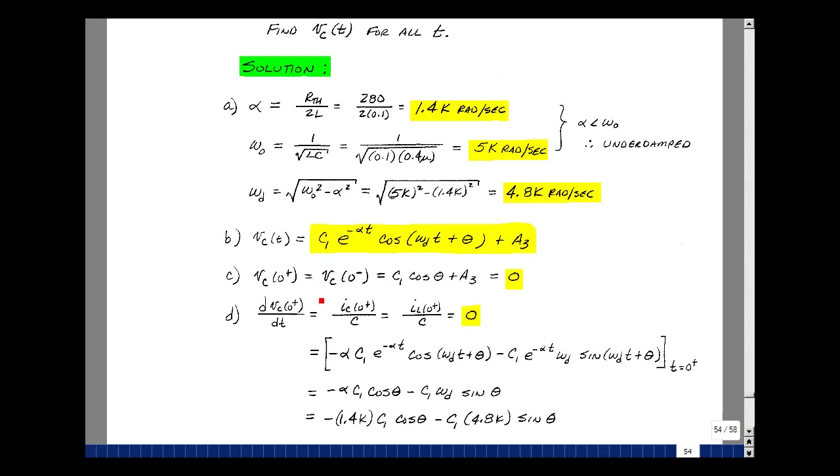Well, the voltage across the capacitance cannot change instantaneously. Since it was equal to zero at zero minus, we can then take our equation and evaluate it at zero plus and be able to solve for some of our constants. So plugging in t equals zero here, we have C1 e to the zero, which is one, cosine of zero plus theta plus A3. Here are three constants, and that expression needs to equal zero.